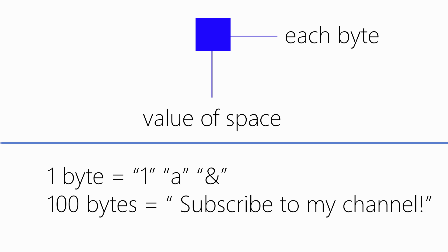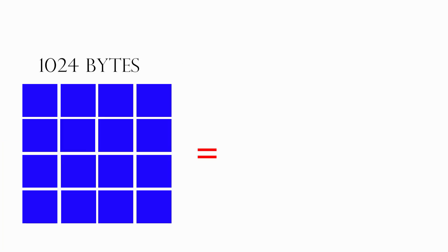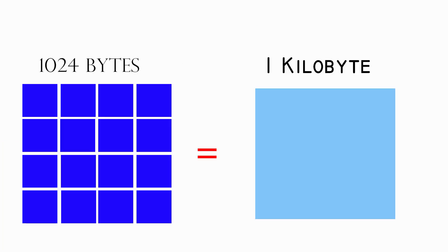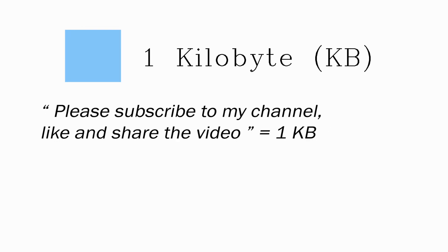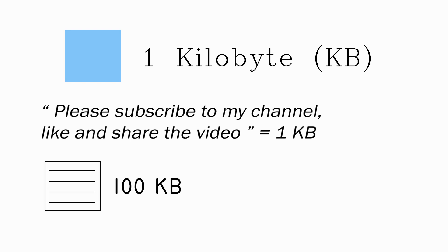We will explain this expression of measuring data step by step. A kilobyte is 1024 bytes. It would be equal to a short paragraph you are reading, whereas a hundred kilobytes would equal an entire page.